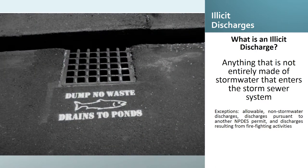What is an illicit discharge? An illicit discharge is anything that is not entirely made up of stormwater that enters the storm drain system. There are a few exceptions: the allowable non-stormwater discharges, discharges that may be pursuant to another NPDES permit, and discharges resulting from firefighting activities. Remember: only rain down the drain.